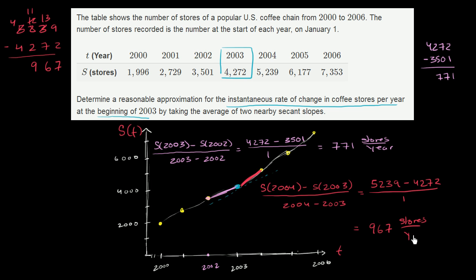So we really just have to take the average of this number and that number to approximate the instantaneous rate of change. So let's do that. So let's take 967 plus 771. And then we can divide by 2. So let's actually figure out what that is.